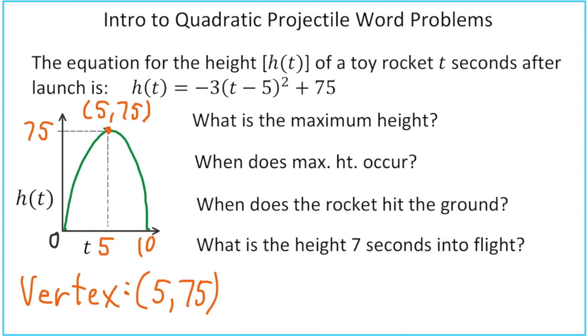When does the rocket hit the ground? What is the height at a specific moment in the flight? In this case, what is the height 7 seconds into the flight? Most of these answers you can see labeled on the diagram.